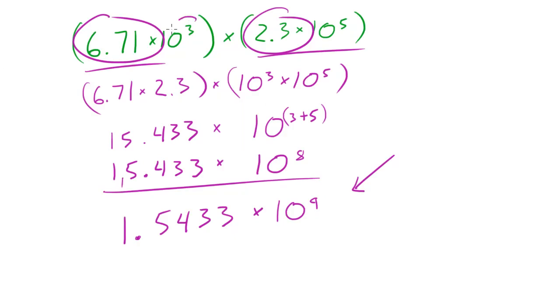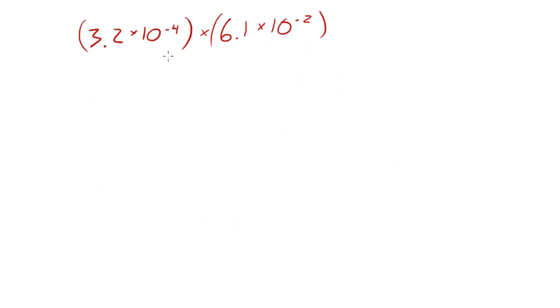So in that example, we used 3 and 5 which are two positive exponents. Now let me go ahead and use negative 4 and negative 2. It's a little bit different but it's basically the same thing. So again, remember the very first thing we need to do is grab 3.2 and 6.1. So 3.2 times 6.1. Surround those in parentheses times 10 to the negative 4 times 10 to the negative 2.